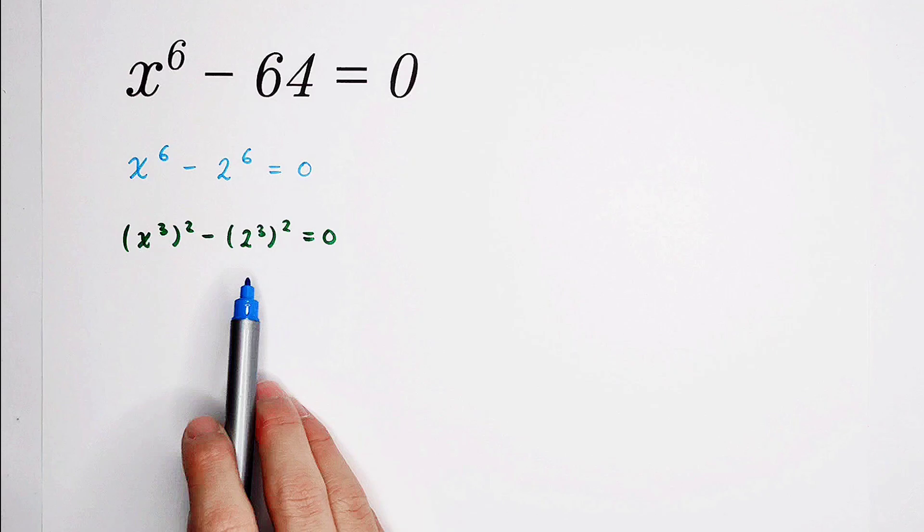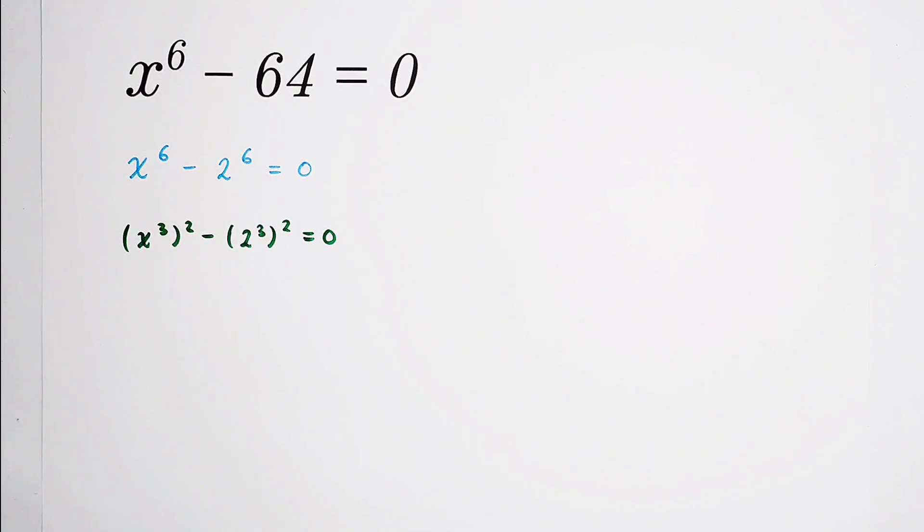That's very good. Then we can use the formula, a squared minus b squared equals a plus b times a minus b.